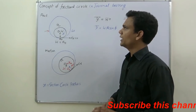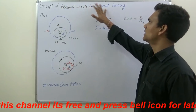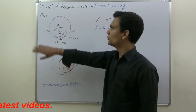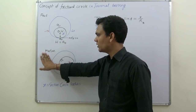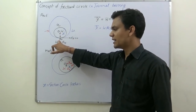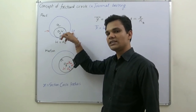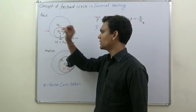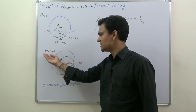Today we are going to discuss the concept of the friction circle in a general bearing. We designed the general bearing to take a radial load. I draw two diagrams: the first one for the rest condition and the second one for the motion condition. The variables are: W (load), Rn (normal reaction of the bearing), Fr (frictional force), ω (angular speed of shaft), O1 (center of bearing), and O (center of shaft). The general bearing is drawn with clearance.